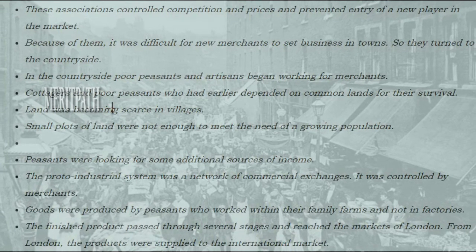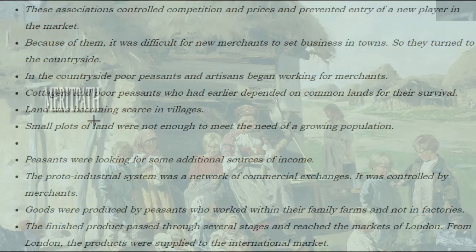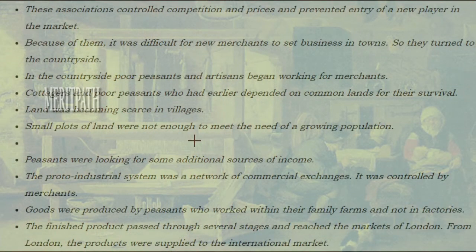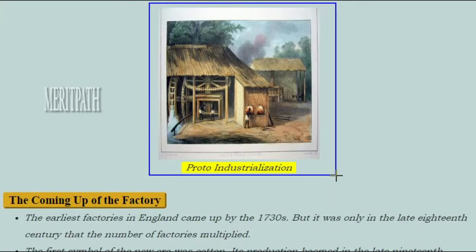Because of these guilds, it was difficult for new merchants to set up business in towns, so they turned to the countryside. In the countryside, poor peasants and artisans began working for merchants. Cottagers and poor peasants who had earlier depended on common lands for survival found land becoming scarce. Small plots of land were not enough to meet the needs of a growing population, so peasants were looking for additional sources of income. The proto-industrial system was a network of commercial exchanges controlled by merchants. Goods were produced by peasants working within family farms, not in factories. The finished product passed through several stages and reached the markets of London, from where it was supplied to the international market.